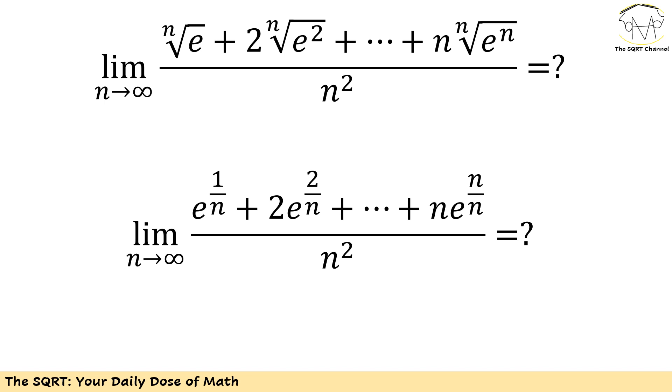To solve this problem, I'm going to rewrite what I have here first. Instead of having nth root of e, I'm going to write it as e to the power of 1 over n. Similarly for the nth root of e squared, I'm going to write it as e to the power of 2 over n, and so on.